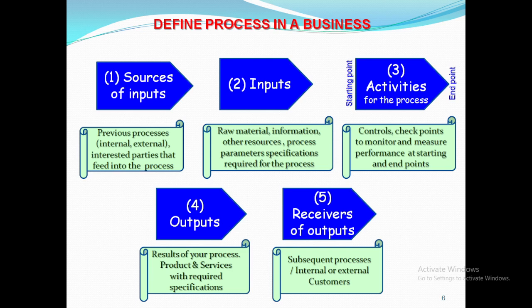Let's define process in a business. This is a typical process flowchart consisting of: first, sources or input from previous processes that are either internal or external; second, the inputs such as raw material, information, other resources, process parameters and specifications; third, the main activities including controls and checkpoints to monitor and measure performance; fourth, the outputs — results of your processes meeting required specifications for products and services; and fifth, receivers of the output, that is subsequent internal or external customers and end users.